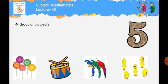Picture میں lollipops ہیں، تو ہم اس کو count کرتے ہیں اور دیکھیں کہ یہ group of five objects کے group سے match کرتا ہے یا نہیں۔ Lollipops: one, two, three, four, five — five lollipops۔ تو یہ group of five objects کا group match ہو گیا — true! کیونکہ یہ five ہیں۔